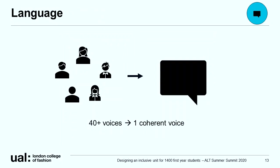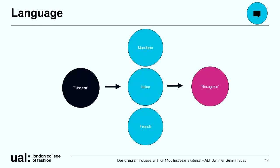A big job in developing this unit was taking documents written by 40-plus colleagues and editing them to sound like one coherent voice. As we made our way through all of our documents, we noticed that we were using academic language when signposting information. One principle we agreed on is that we would use plain English for instructional language. For example, one document used the word 'discern.' When we translated 'discern' into Mandarin, Italian, and French — based on the languages that we speak in the room — we found that it had multiple meanings. Yet 'recognized,' another word for discern, made sense within the context of the instructional nature of this sentence and translated better.